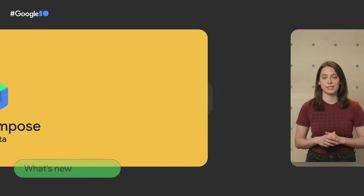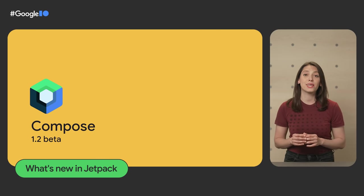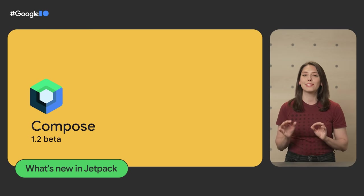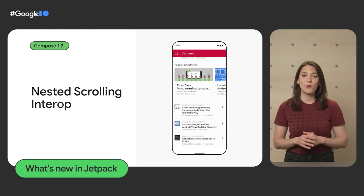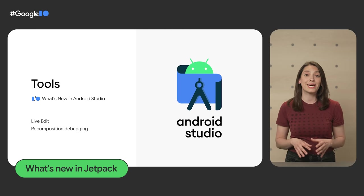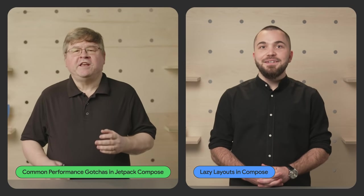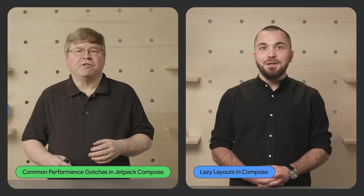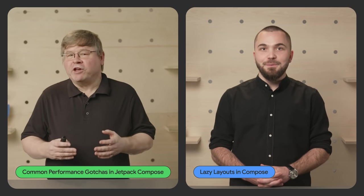One of the latest Jetpack libraries is Compose, our modern declarative UI toolkit. Compose 1.2 Beta was just released, continuing to bring the APIs you need to support more advanced use cases like downloadable fonts, lazy scrolling interop, and more tooling support with features like live edit, recomposition debugging, and animation preview. Compose features in a number of talks, but two of them are deep dives into how Compose works: performance and lazy layouts.